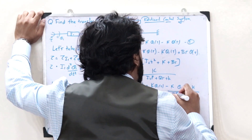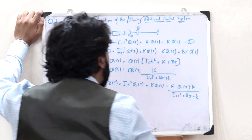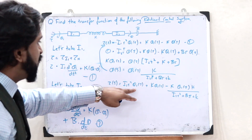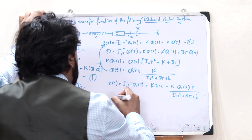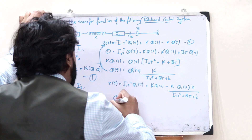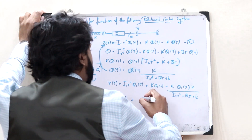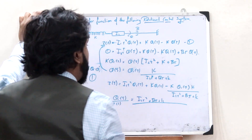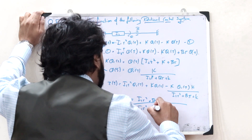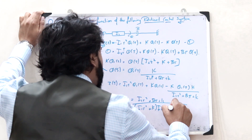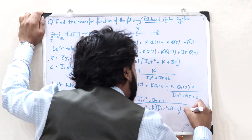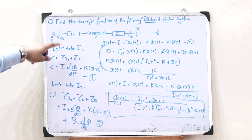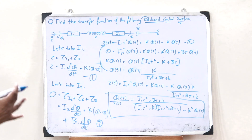The transfer function is given as the output divided by the input. Here the output is theta1(S). On taking theta1(S), we would get the transfer function theta1(S) divided by tau(S). On expanding this, we would get I2·S squared plus B·S plus K, the whole divided by: I1·S squared plus K, whole multiplied by I2·S squared plus B·S plus K, the whole minus K squared. This is thus the required transfer function of this particular rotational control system — this is simply how we can find the transfer function of a rotational mechanical control system.